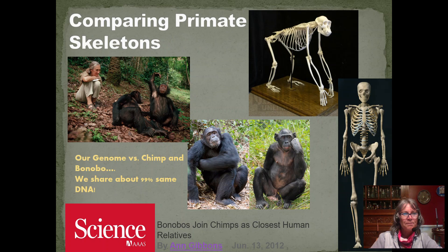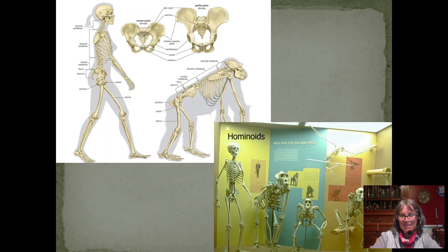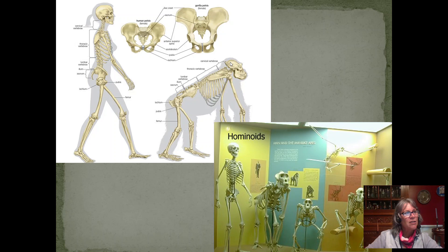You'll get a chance to compare some primate skeletons. These images of a chimp versus humans show we share 99% of our DNA — quite similar in bone and skeletal structures. You'll look at differences related to the pelvis: rounded versus vertical pelvis, arched feet versus flat feet, longer arms, and curved neck versus straight vertebrae. All of these differences have to do with a change in niche toward walking upright — bipedalism.